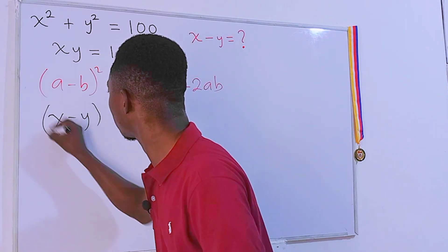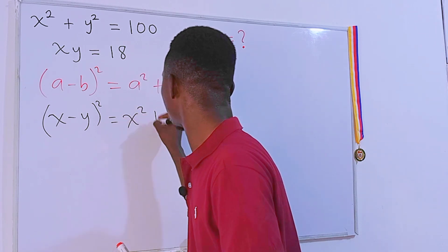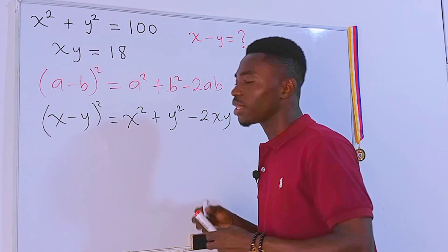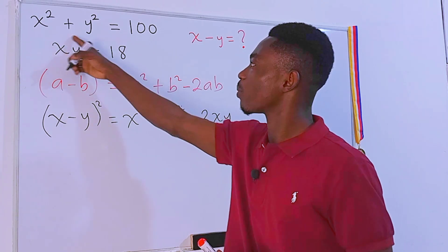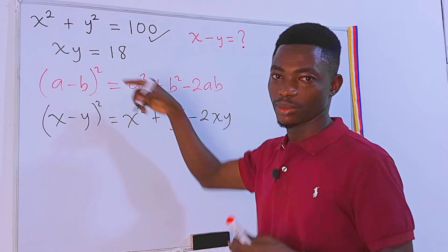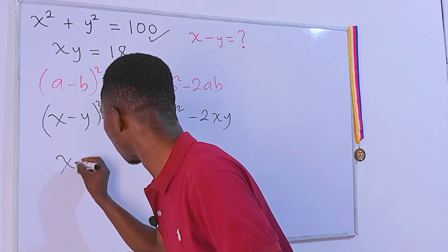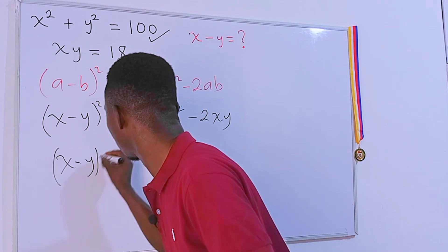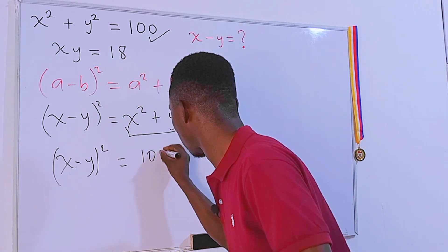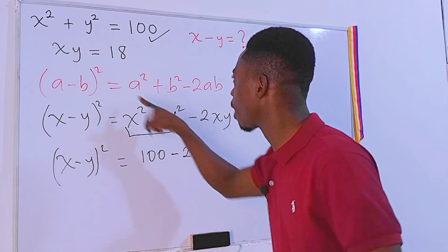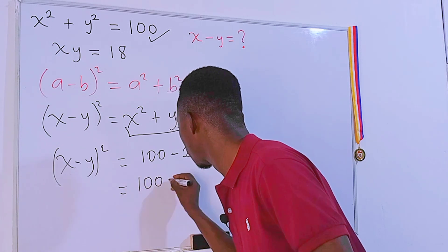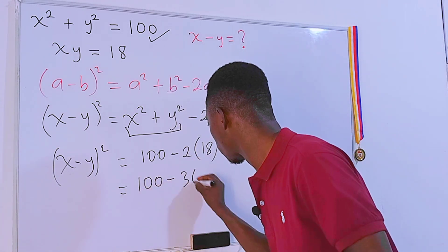We can rewrite our problem so that (x minus y) squared equals x squared plus y squared minus 2xy. What is x squared plus y squared? We have it from the first equation: it's 100. What is xy? We have it from the second equation: it's 18. So we get (x minus y) squared equals 100 minus 2 times 18.